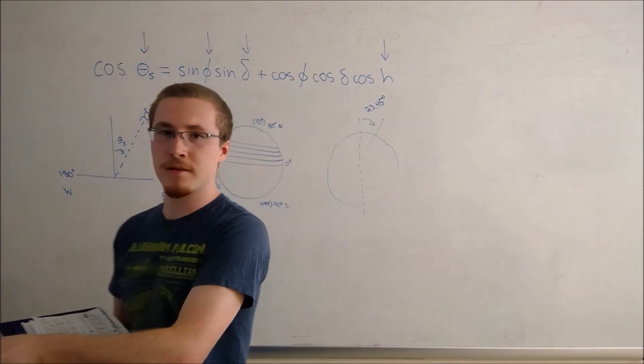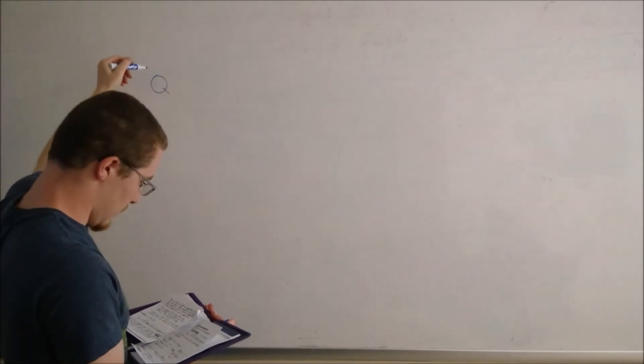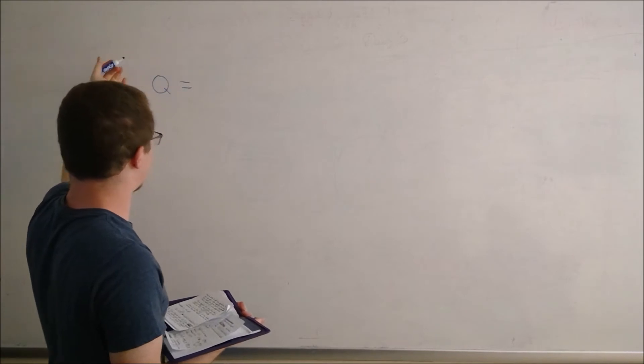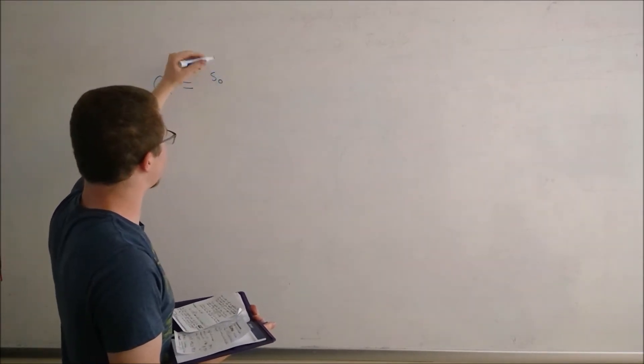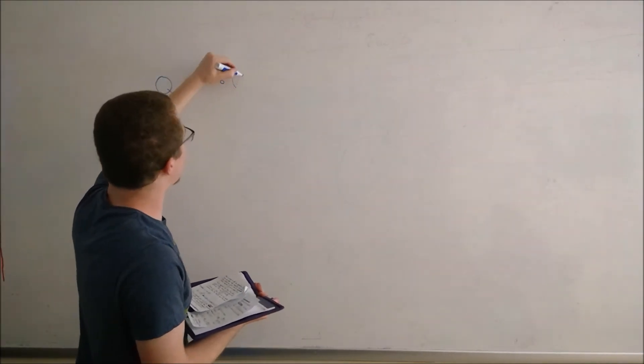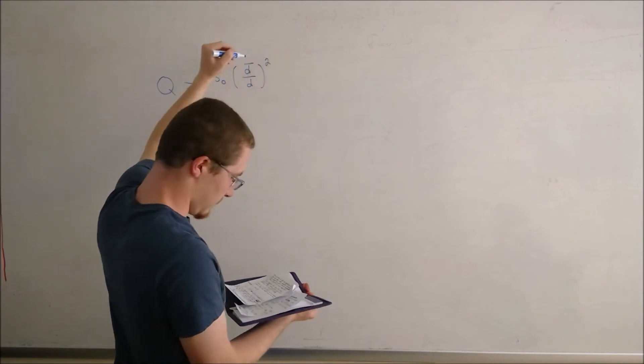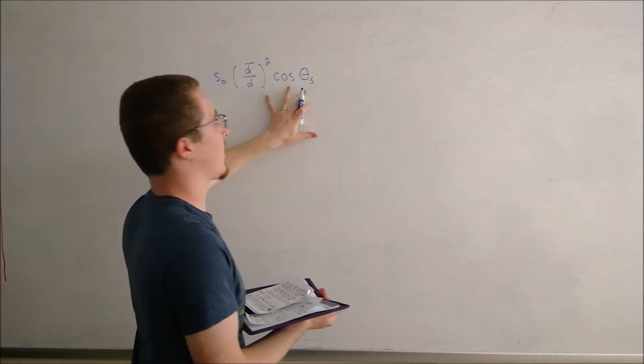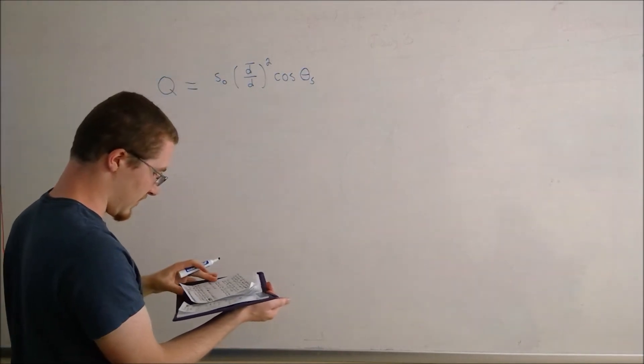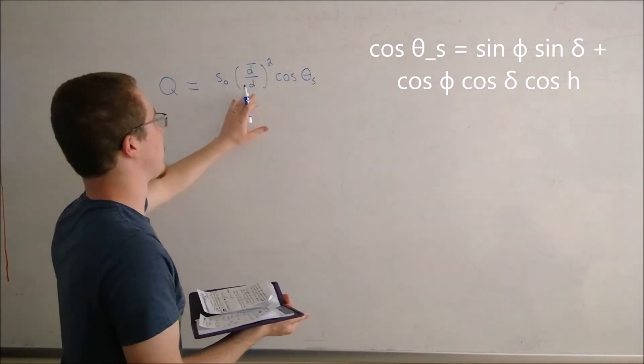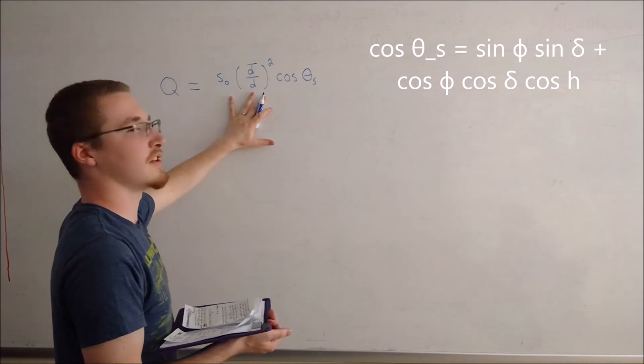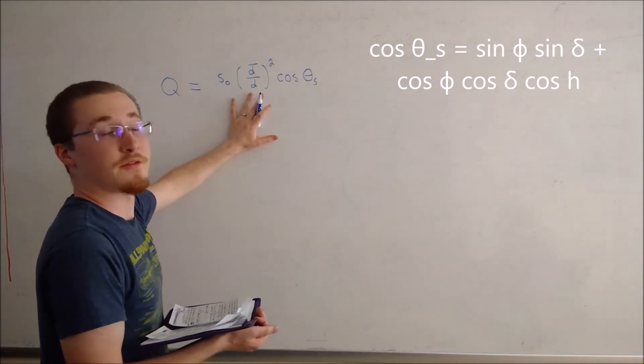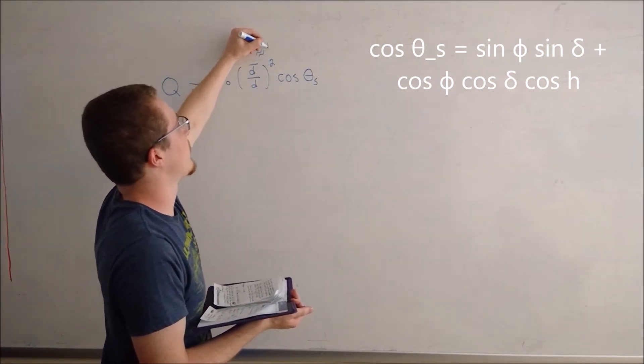All right, so now we will continue with our second equation which is for the solar flux per unit area, which we'll define as Q. Q being the total solar radiation incident at the top of the atmosphere times the value of d bar over d squared times the cosine of the solar zenith angle. And this is where our equation from before will come in. D bar is the average distance from the Earth to the Sun and d is the actual distance. This value will go to 1 as an approximation in our example.